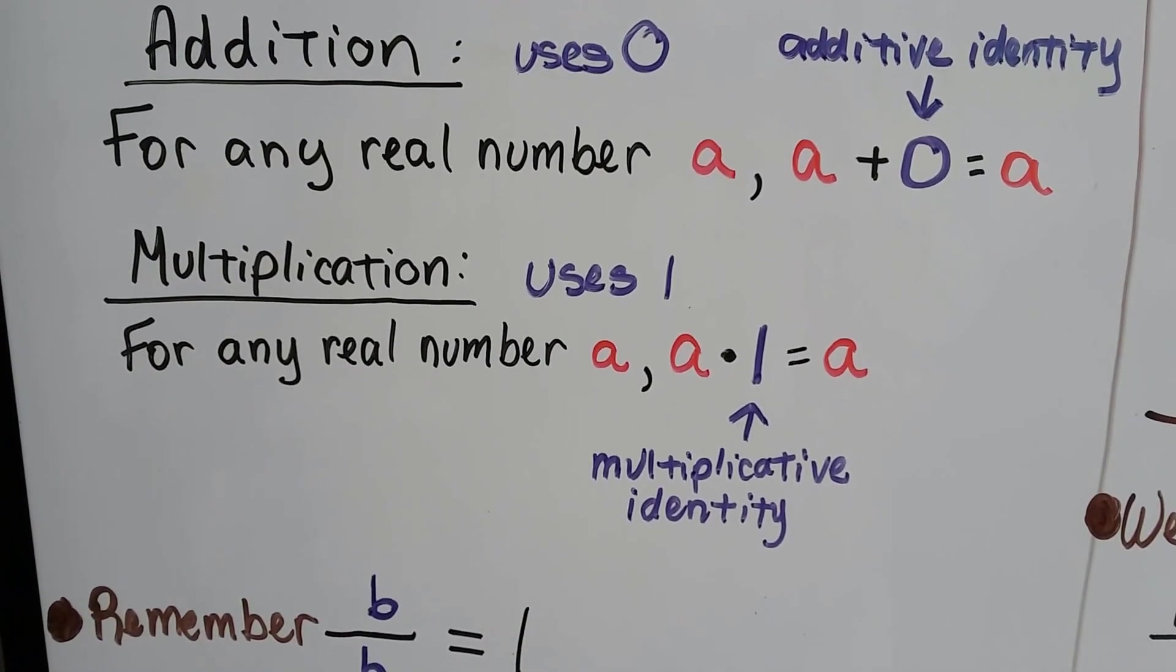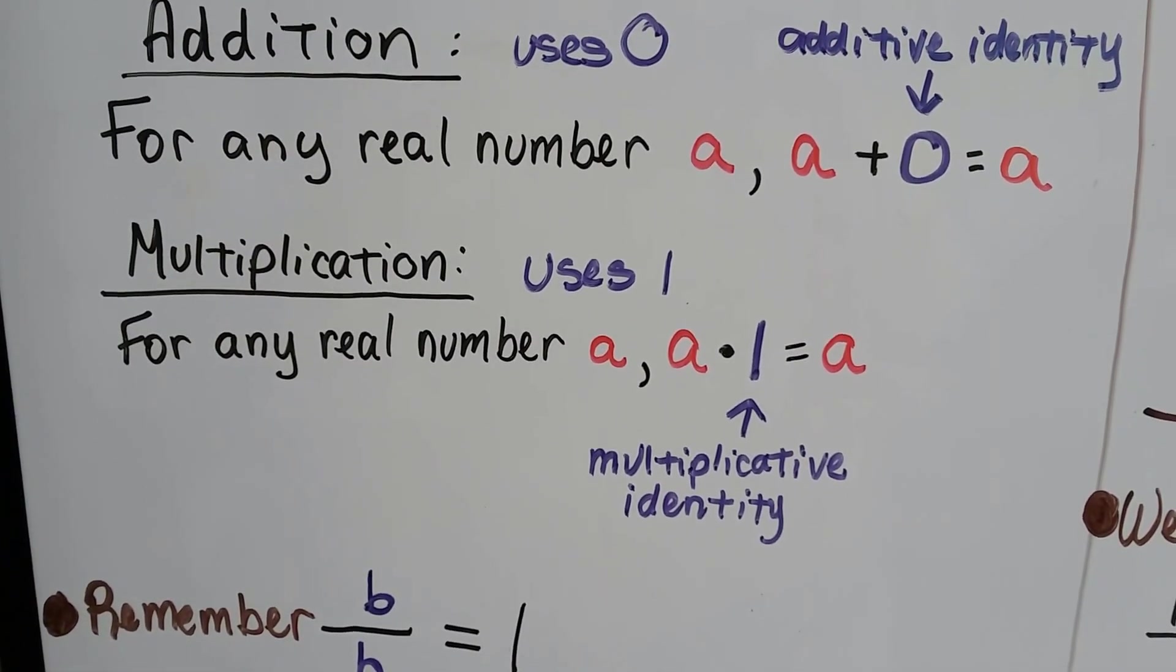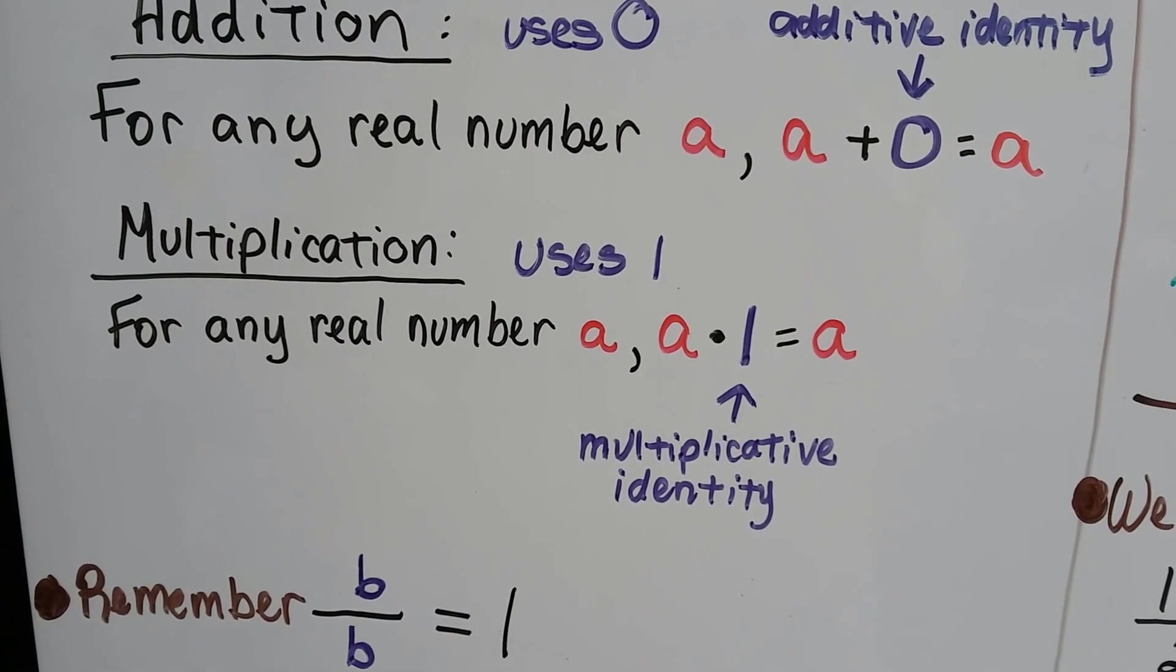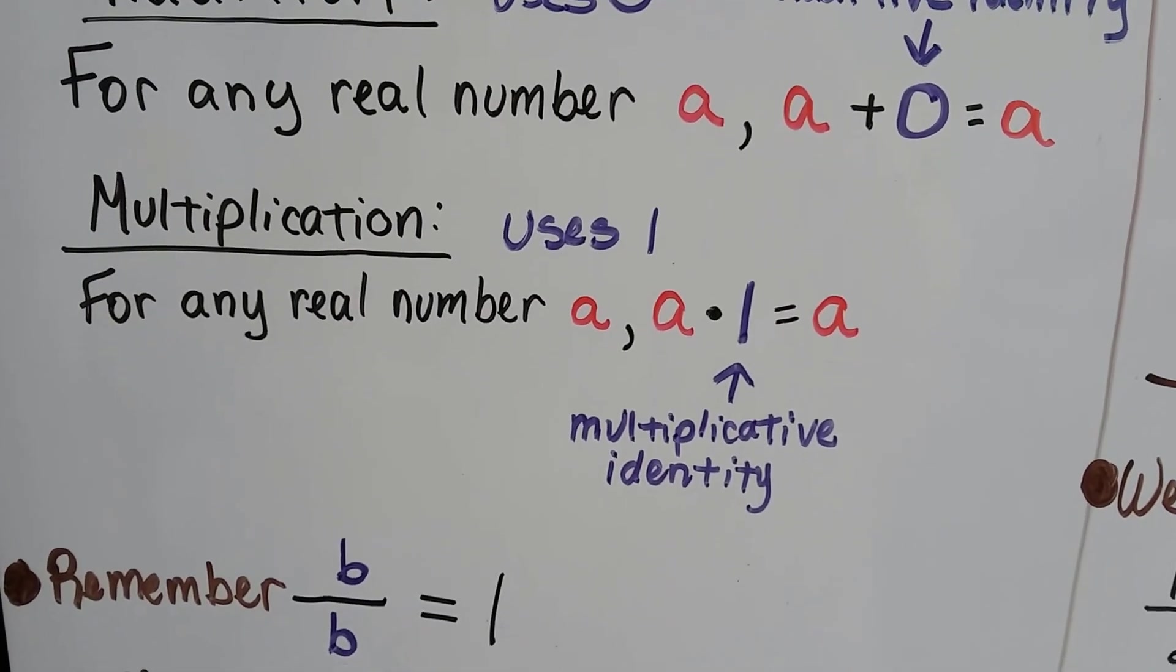For multiplication, which uses 1, for any real number a, a times 1 is going to make it stay a. And that 1 is the multiplicative identity.